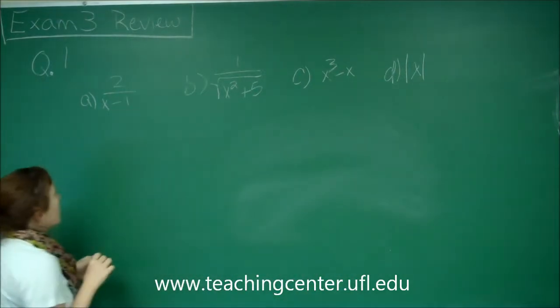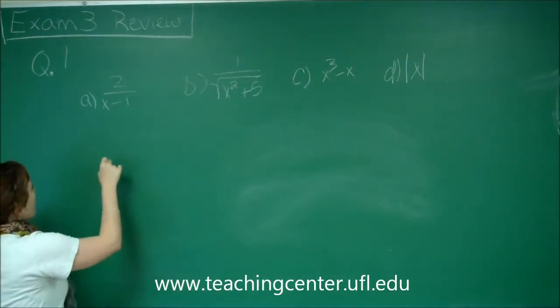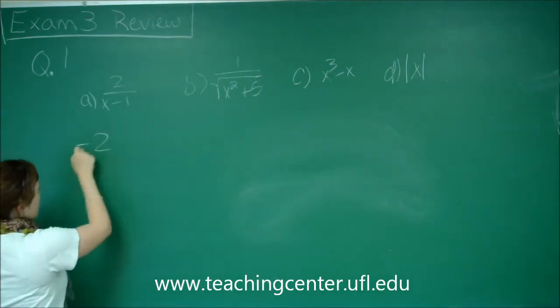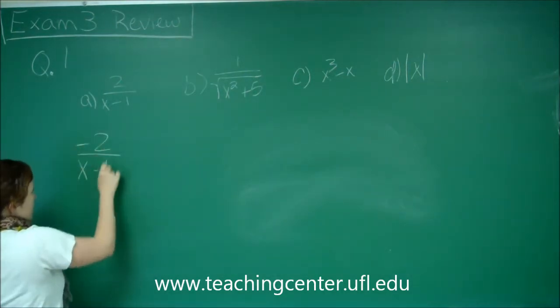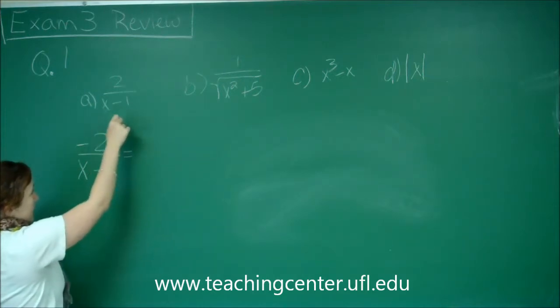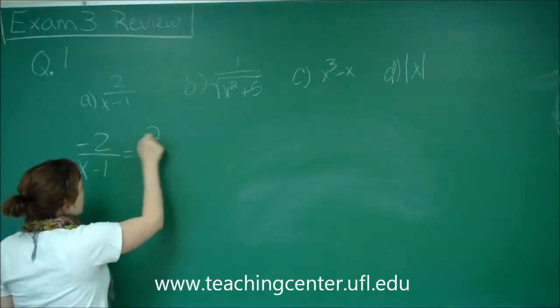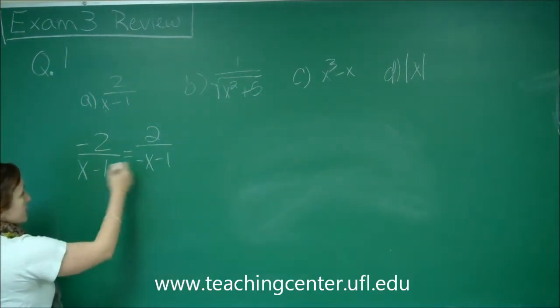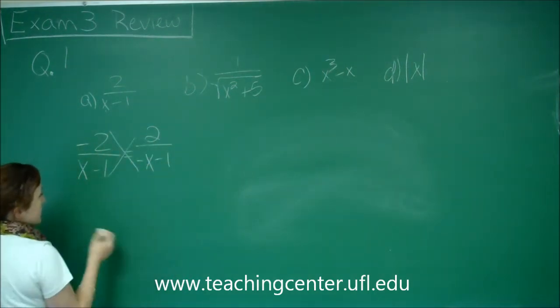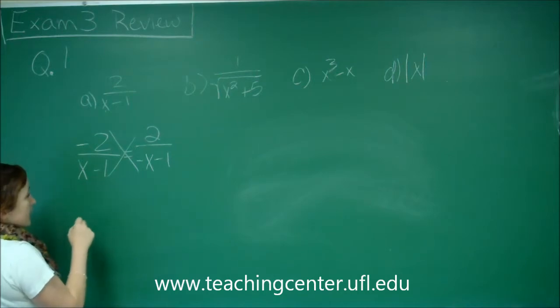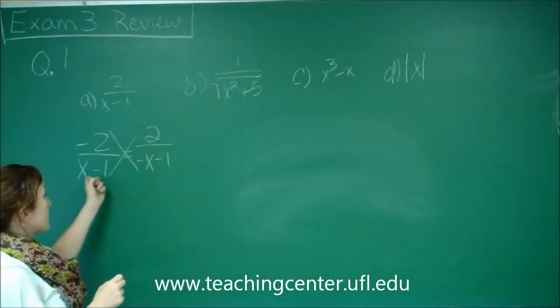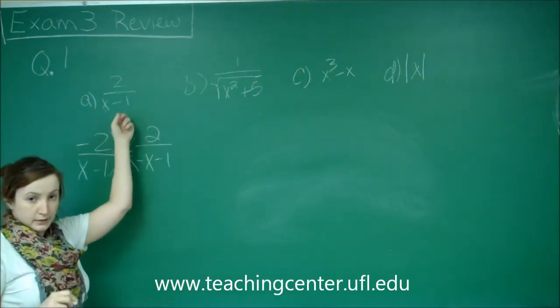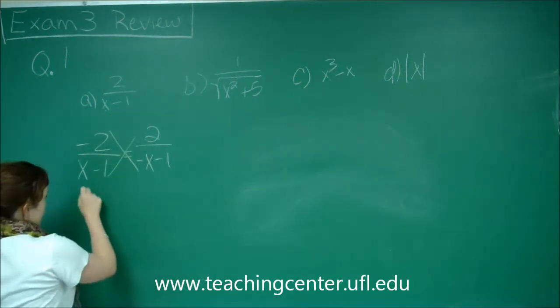So first one, A, we have 2 over x minus 1. So if we wanted an odd function, we would be looking for negative 2 over x minus 1 when we plugged in negative x. But when I plug in negative x, we get 2 over negative x minus 1. These two things are not the same. So this is not odd. Actually, they're not the same, and when we put in the negative x, we didn't get what we put in the regular function either, so this is neither.